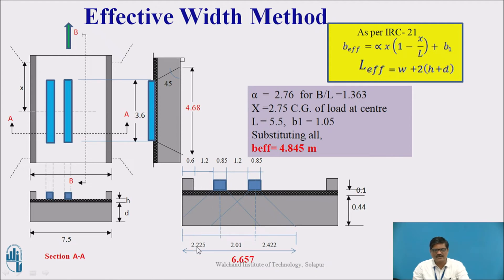The space available on the left-hand side is only 2.225. Therefore, only that much value we can consider. The center-to-center distance between the two wheels is 2.01, and the remaining half, that means half of 4.845, is available on this side, which is 2.422. If I take the total of all, I will get the value 6.657. This is the total B-effective for the given problem.